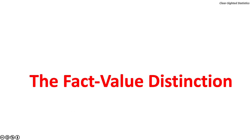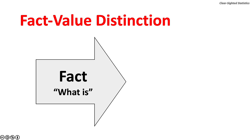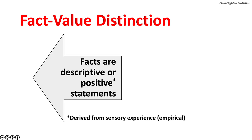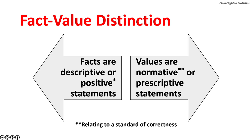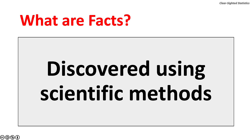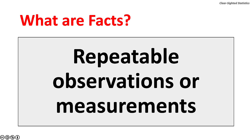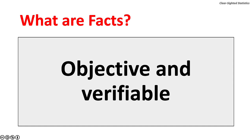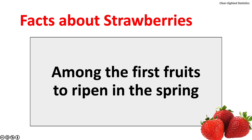Let us turn to the fact-value distinction. A fact deals with what is. A value deals with what ought to be. Facts are descriptions or positive statements, meaning that facts are empirical because they are derived from sensory experience. Values are normative or prescriptive statements; they relate to a standard of correctness. Facts are discoverable using scientific methods. Facts are repeatable observations or measurements, also called empirical evidence. Facts are objective and verifiable.